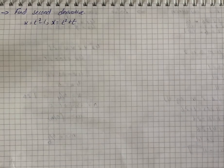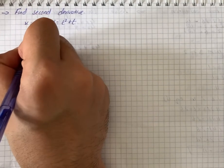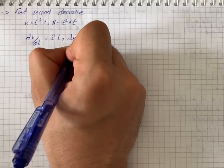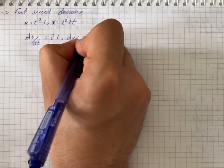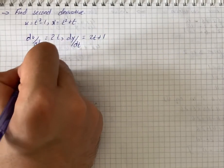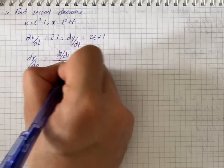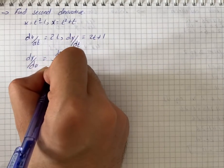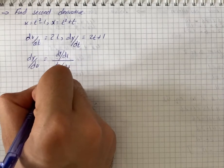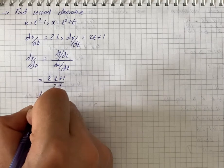Here we have to find the second order derivative. So we write dx over dt is equal to 2t, and dy over dt is equal to 2t plus 1. So we have dy over dx is equal to dy over dt divided by dx over dt, which gives us 2t plus 1 divided by 2t.